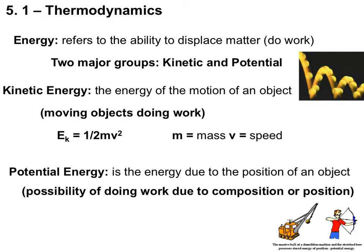There are two major groups of energy that you may already be familiar with: kinetic and potential energy. Kinetic energy is the energy of an object that's in motion. The formula is E sub K, which refers to kinetic energy, equal to half of your mass times your velocity squared.